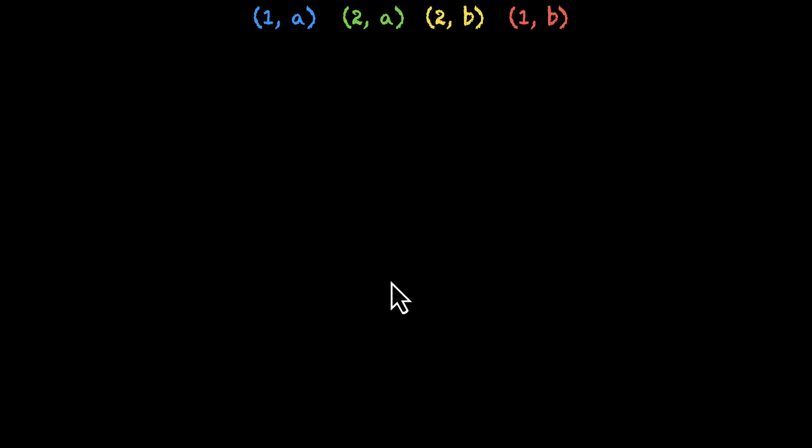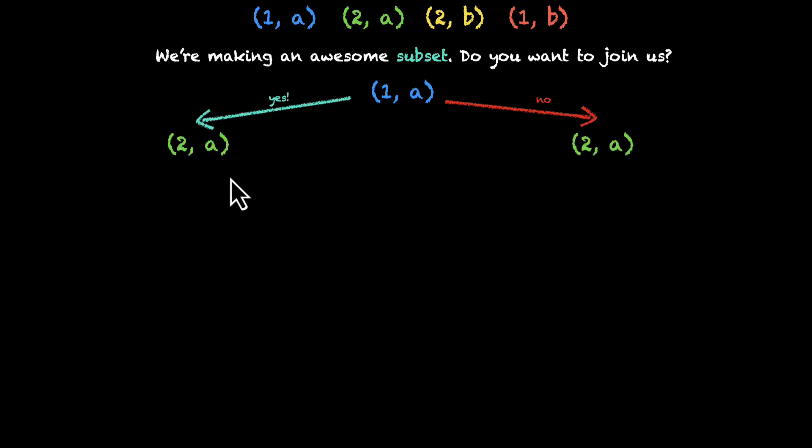And let's ask them to join our awesome subset. So we're making an awesome subset. Do you want to join us? Let's ask this to 1A. Suppose 1A says yes, I want to join. That's good for us. Even if 1A says no, we still have a lot more elements. So if 1A says yes, we'll ask this to the next one, we'll ask 2A. If 2A says yes, we'll ask it to the next one. Even if the elements are saying no, they're creating unique paths.